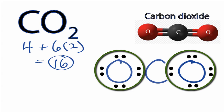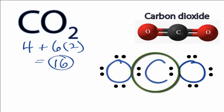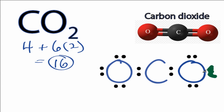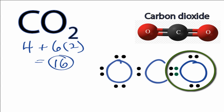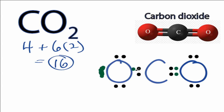But the carbon in the center only has four valence electrons. Let's move these two lone pair electrons and share them with the carbon to form a double bond. Now the oxygen still has eight, but the carbon only has six — so we're almost there. Let's take these two electrons over here and share them to form another double bond.